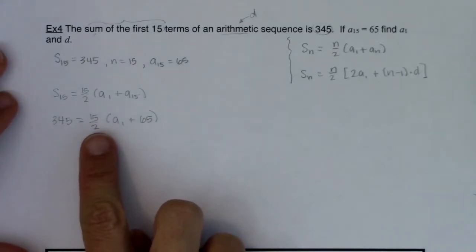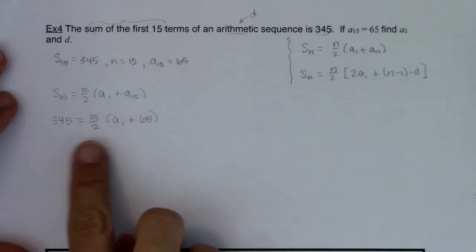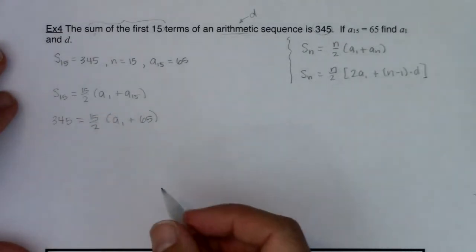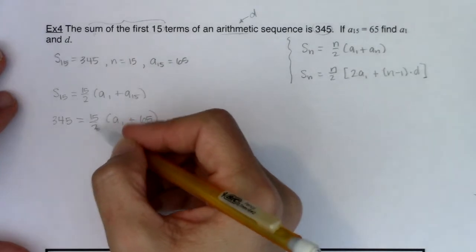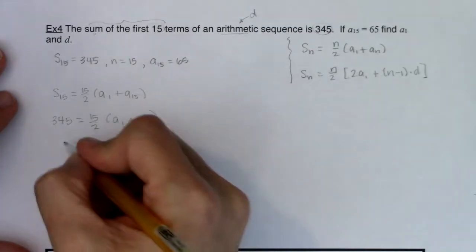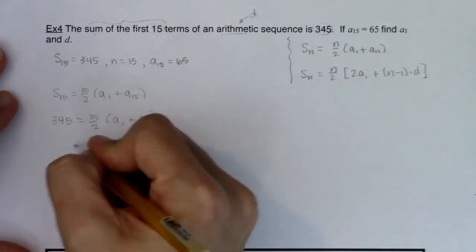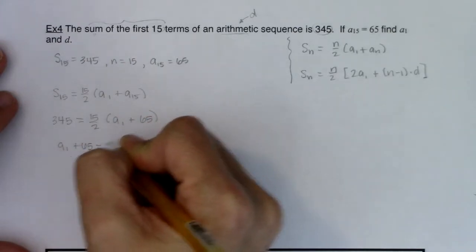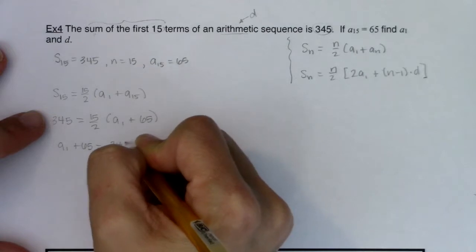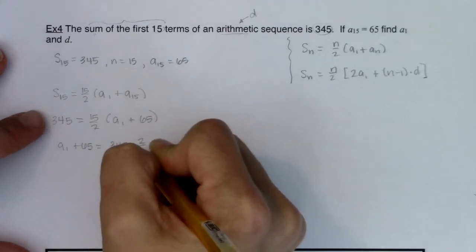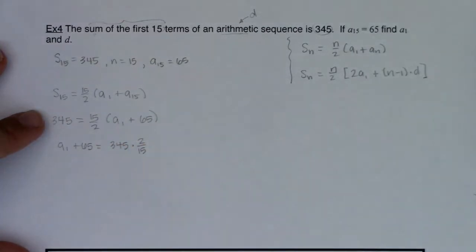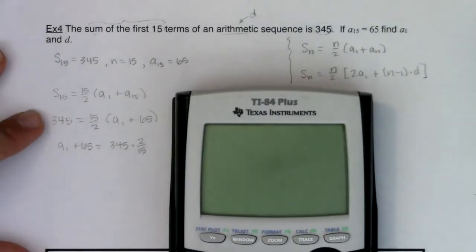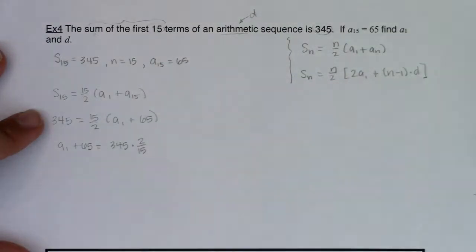Let me go ahead and divide both sides by 15 halves, or another way of saying that is I'll multiply both sides by 2 over 15, so I want to get rid of this 15 halves here. When I divide both sides by 15 halves, on the left side I'm going to write a sub 1 plus 65, and on the right side I would have 345 times 2 out of 15. So I'm going to go 345 times 2 out of 15, we're looking at 46.